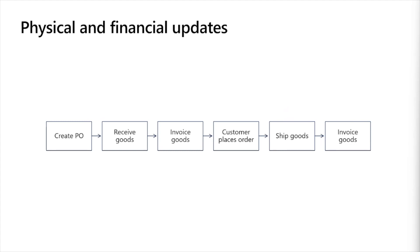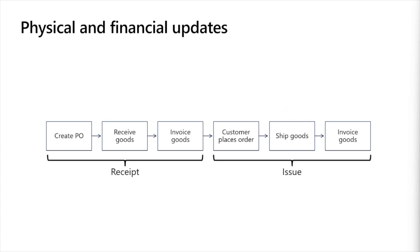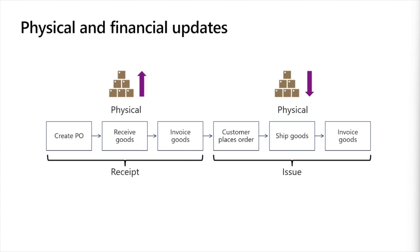During processing of issue and receipt transactions, multiple updates are applied and different statuses are assigned. Looking at our basic process flow, the purchase order is a receipt since it increases inventory, and the sales order is an issue since it decreases inventory. These are further classified as physical and financial updates. A physical update impacts on-hand inventory quantity, while a financial update records the cost to the general ledger. The product receipt and the sales order packing slip are both physical transaction updates — the product receipt increases on-hand inventory and the packing slip decreases it.